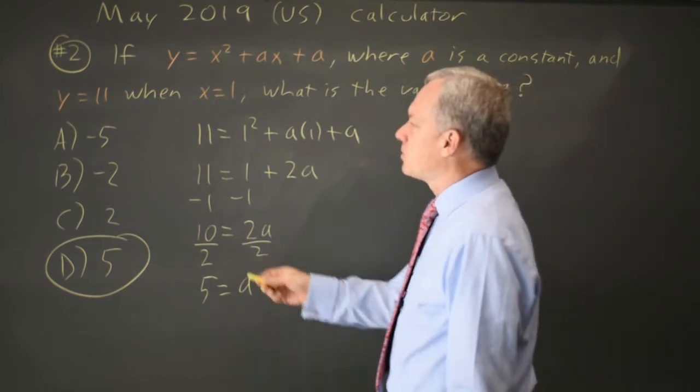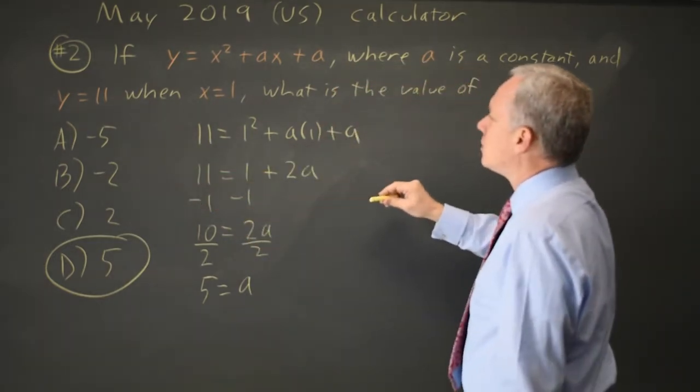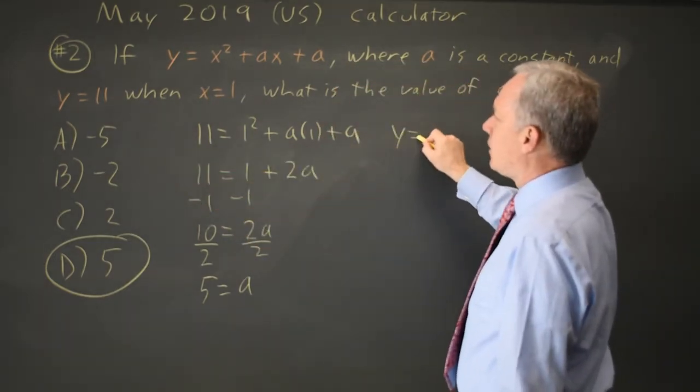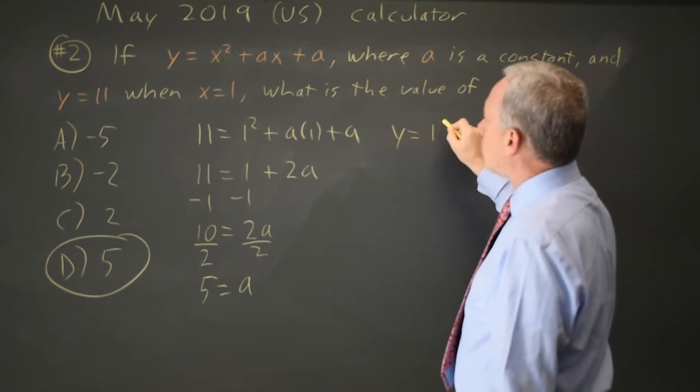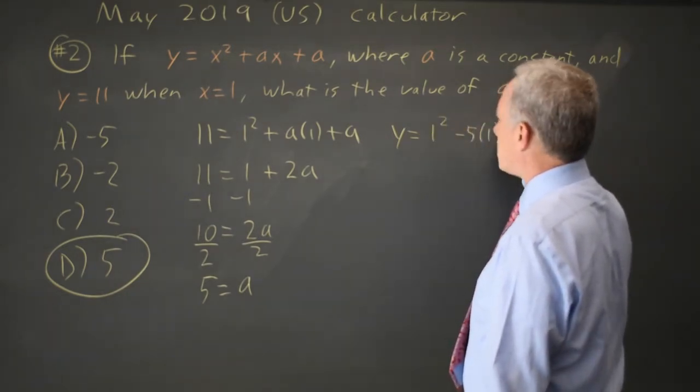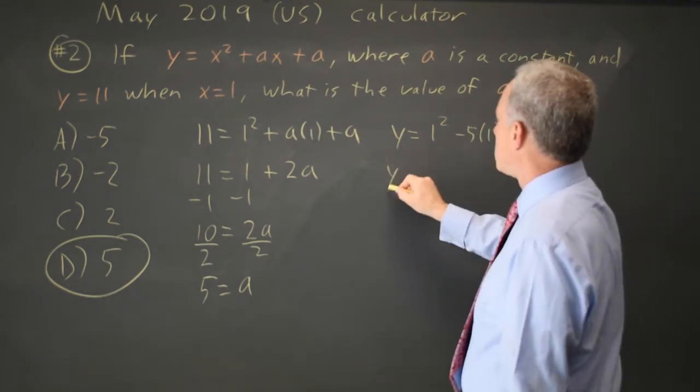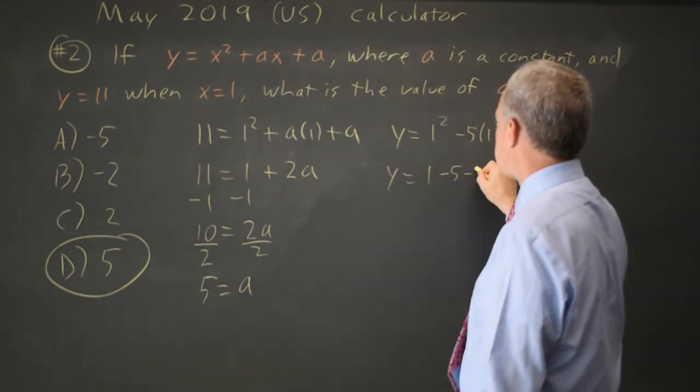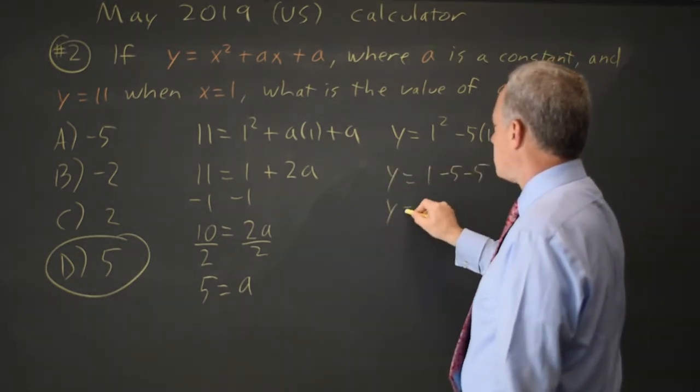Alternatively, I could substitute in the answer choices. So y equals 1 squared minus 5 times 1 minus 5.